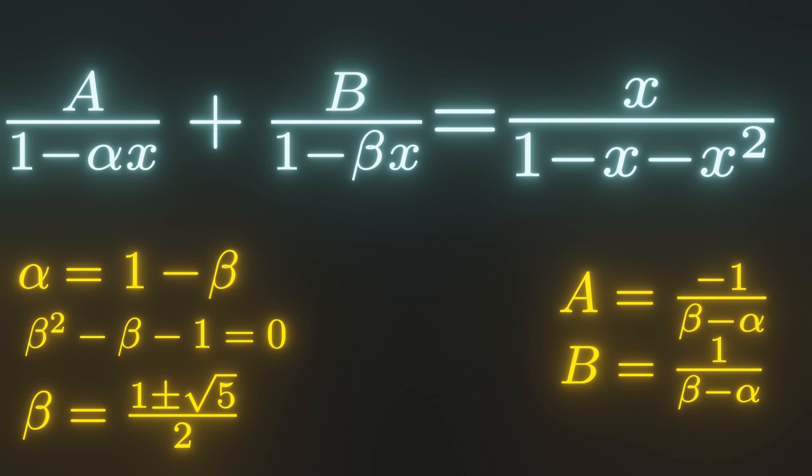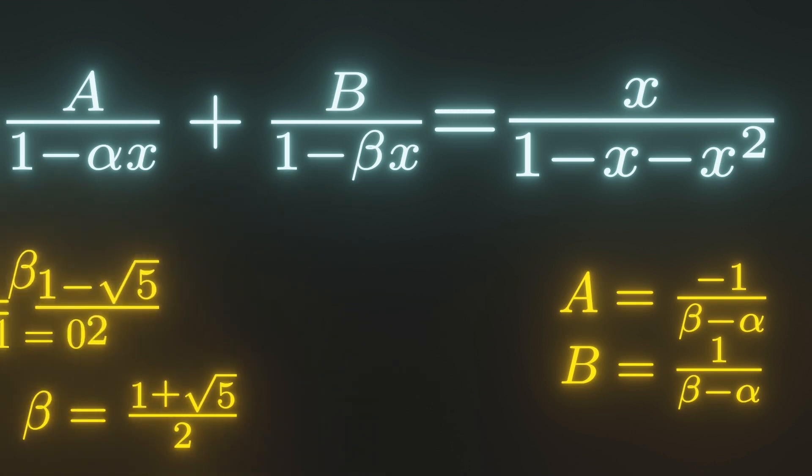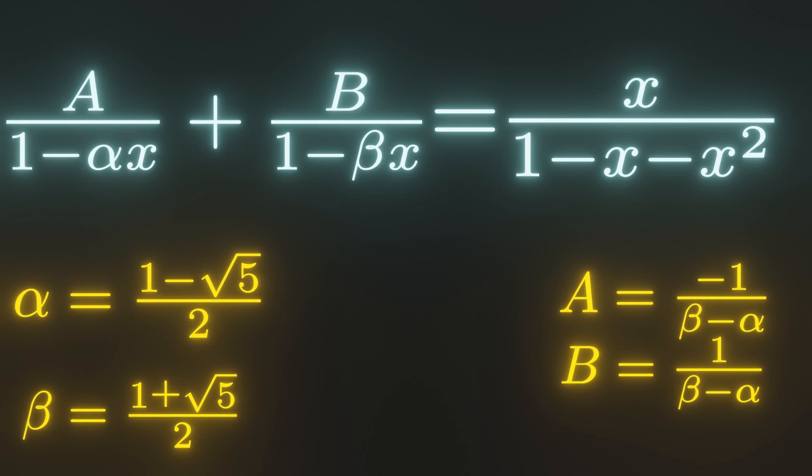Now, which solution should be used for beta? Either one will work, so I will make the arbitrary choice of beta being 1 plus the square root of 5 over 2. In that case, we get that alpha is equal to 1 minus the square root of 5 over 2, which is the other root of our polynomial.